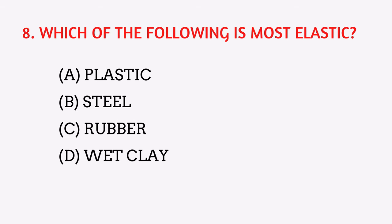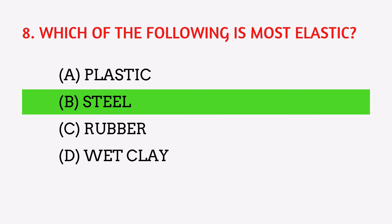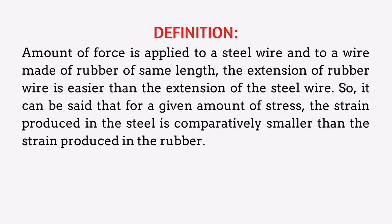Which of the following is most elastic? The answer is steel. When the same amount of force is applied to a steel wire and a rubber wire of the same length, the extension of the rubber wire is greater. For a given amount of stress, the strain produced in steel is comparatively smaller than the strain produced in rubber.